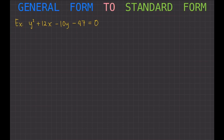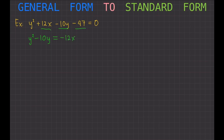We rearrange so that the variable that is being squared stays on the left side and all other terms go to the right. The variable being squared here is y, so we want all the y's to stay on the left: y squared minus 10y. All other stuff goes to the right, so positive 12x becomes minus 12x and minus 47 becomes plus 47.